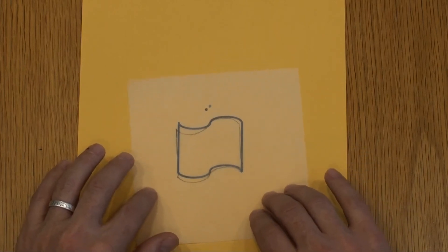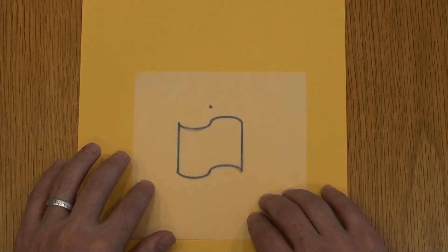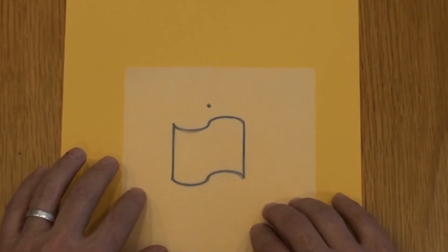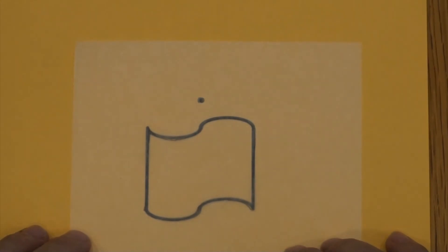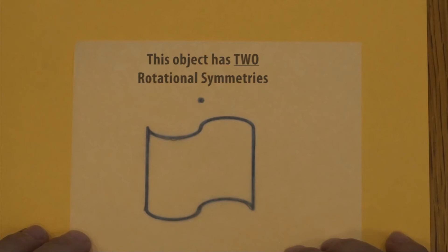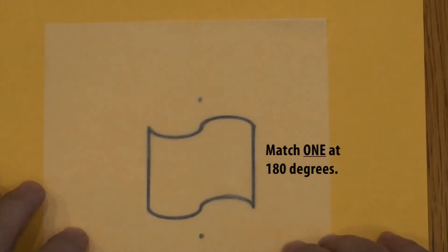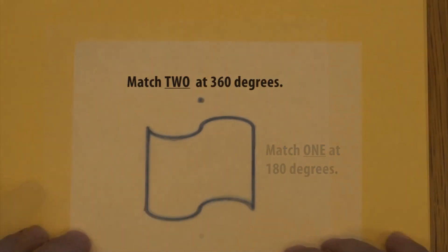The object makes another match when we align the top points at 360 degrees. This object has two rotational symmetries, and each rotational symmetry angle was 180 degrees.